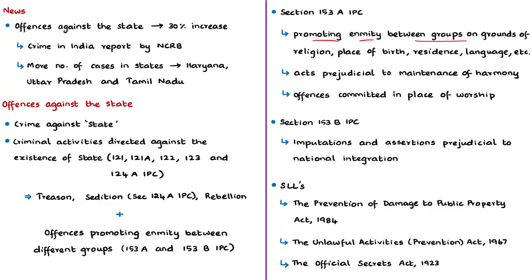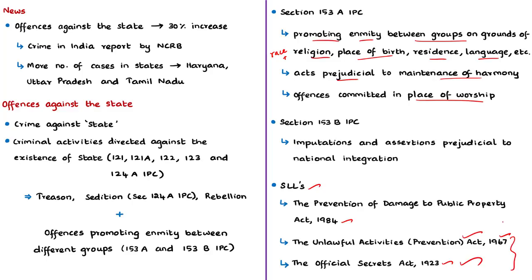Section 153A covers enmity on grounds of religion, race, place of birth, residence, language, etc., and also covers acts prejudicial to the maintenance of harmony, including offenses committed in places of worship. In addition to IPC offenses, certain Special and Local Laws (SLL) are included under offenses against the state, namely the Prevention of Damage to Public Property Act 1984, the Unlawful Activities Prevention Act 1967, and the Official Secrets Act 1923. Cases were registered under both the Official Secrets Act 1923 and the Unlawful Activities Prevention Act 1967 in this report.